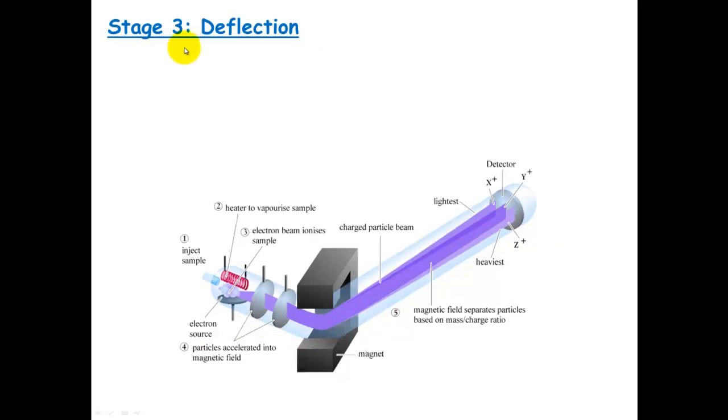The third stage involves deflection. And this is this section here where the magnet is. It involves this entire section. This is the first bit with the magnet, and you've also got magnetic field across here.